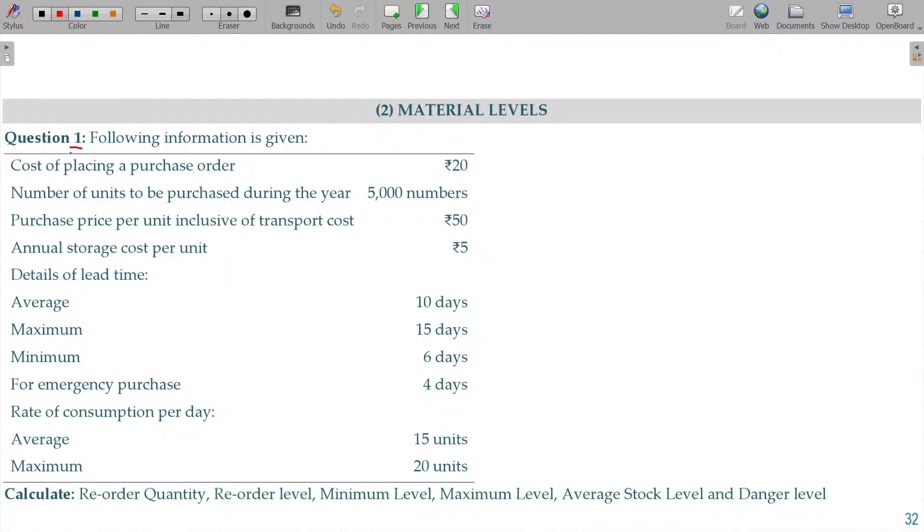Material levels. Question number 1. Following information is given: Cost of placing a purchase order being 20, the ordering cost. Number of units to be purchased during the year being 5000, annual requirement. Purchase price per unit inclusive transport cost 50. Annual storage cost 5 rupees, carrying cost per unit per annum. So these details are for calculating the EOQ.